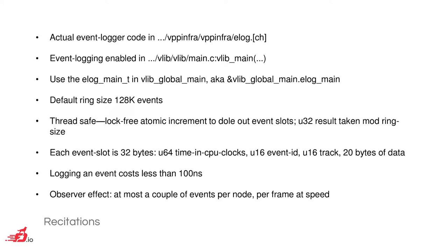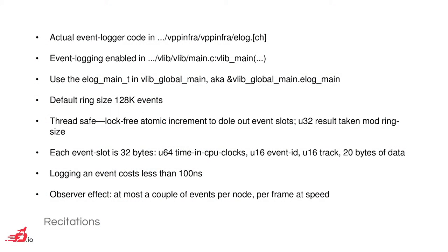It uses a lock-free atomic increment to dole out event slots. The ring size is a power of two — you do an atomic op to a U32 result mod a power of two. Formally it's a race, but the truth is you're not going to log four billion events in the period of time it takes one thread to log one event, so it's a risk worth taking and it does make it run considerably faster. Each event slot is 32 bytes, aka the cache line size on older CPUs.